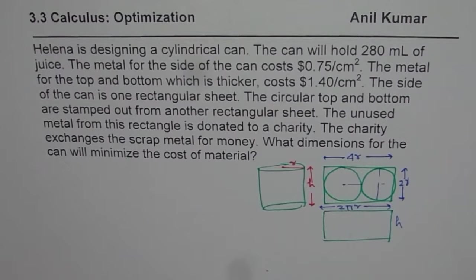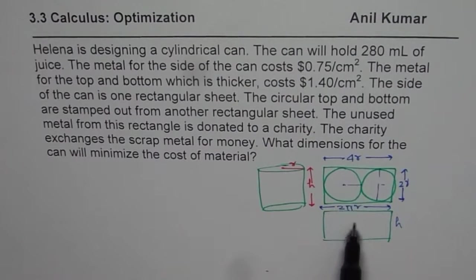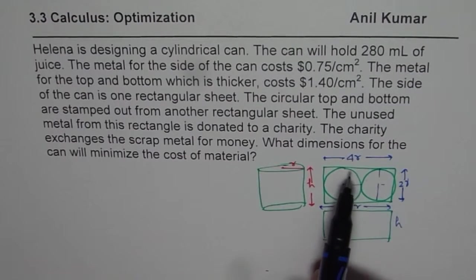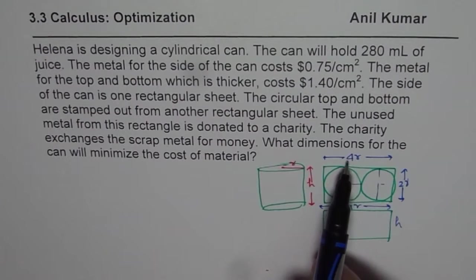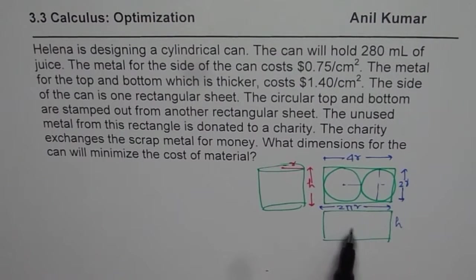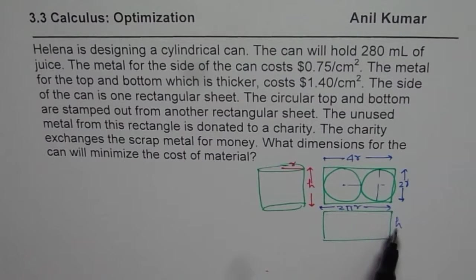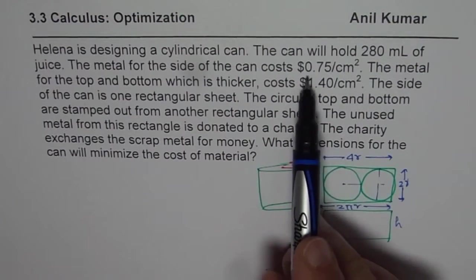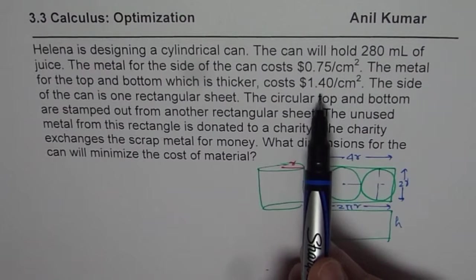So when we are talking about surface area, we need to add cost of these two materials. So effectively, the area for thicker sheet is 4 R times 2 R and for the other sheet, it is 2 pi R times H. And the cost of each is given to us. So that is how we are going to find the cost.